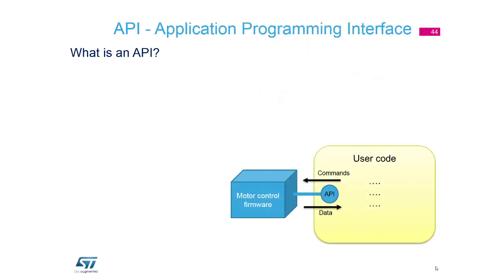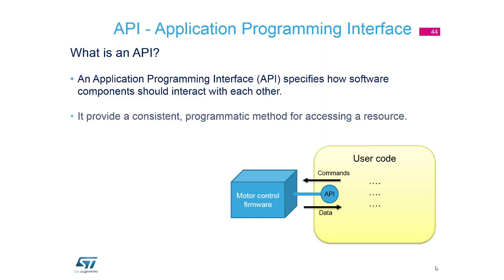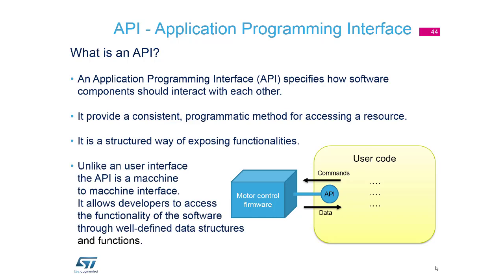Now we switch to the API — Application Programming Interface. What is the API? It's a setup of functions, definitions of structures, variables, and the interaction between your code and our library.